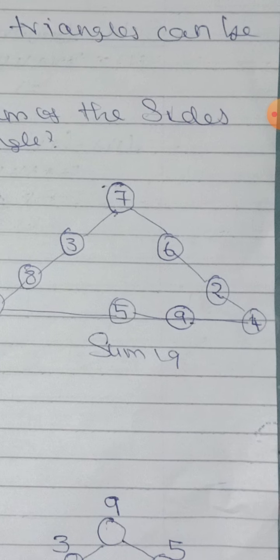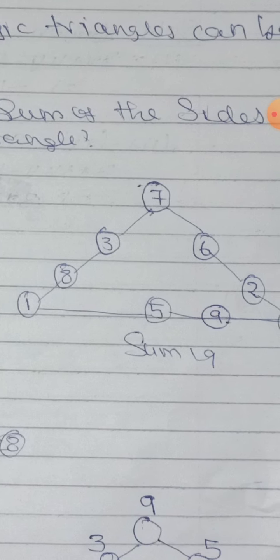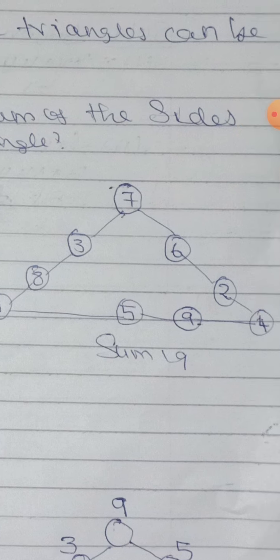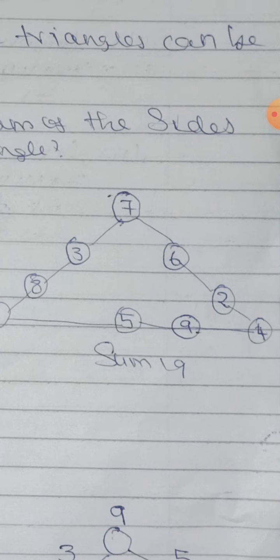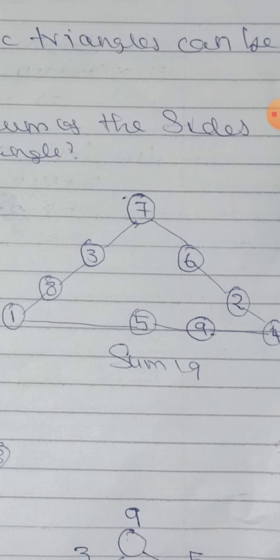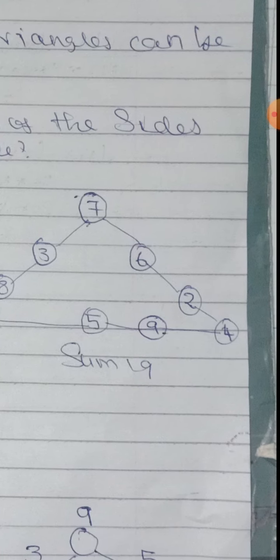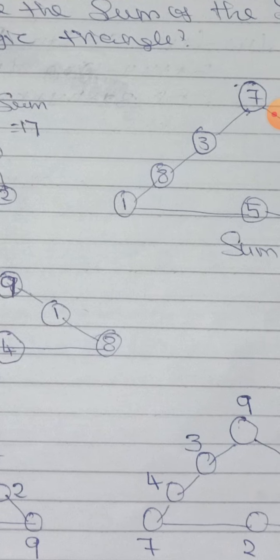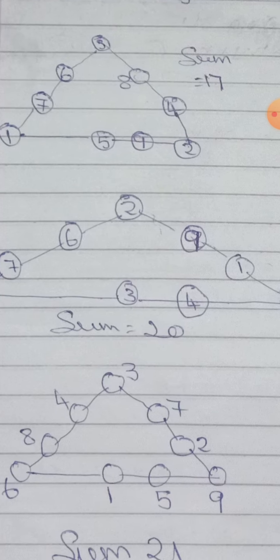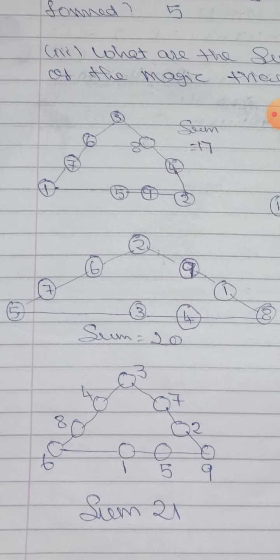You can interchange the values, and you will get all sides the same value. For example, with sum equal to 19: 7 plus 3 is 10, plus 8 is 18, plus 1 is 19. And 7 plus 6 is 13, plus 6 is 19. Downwards: 6 plus 5, plus 4 is 19. All sides have the same value.